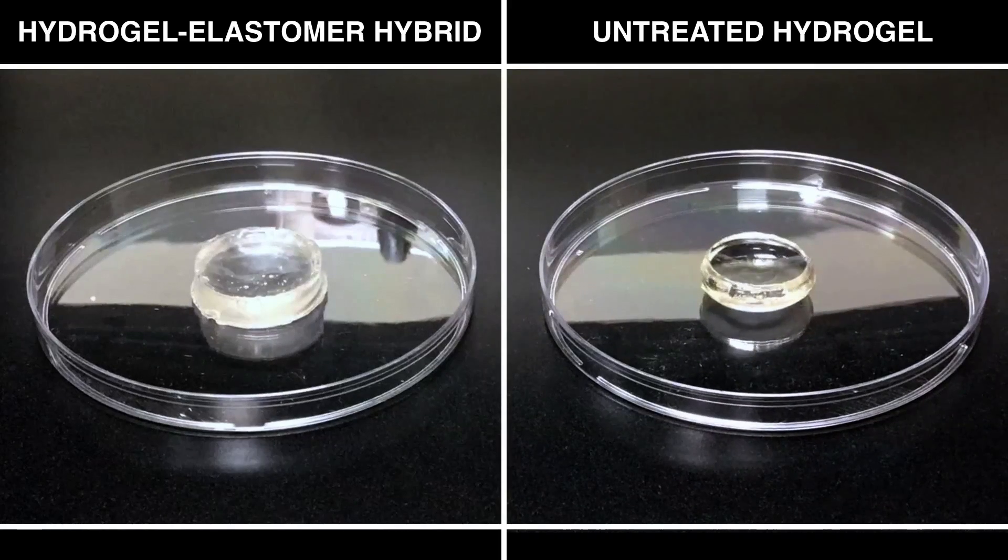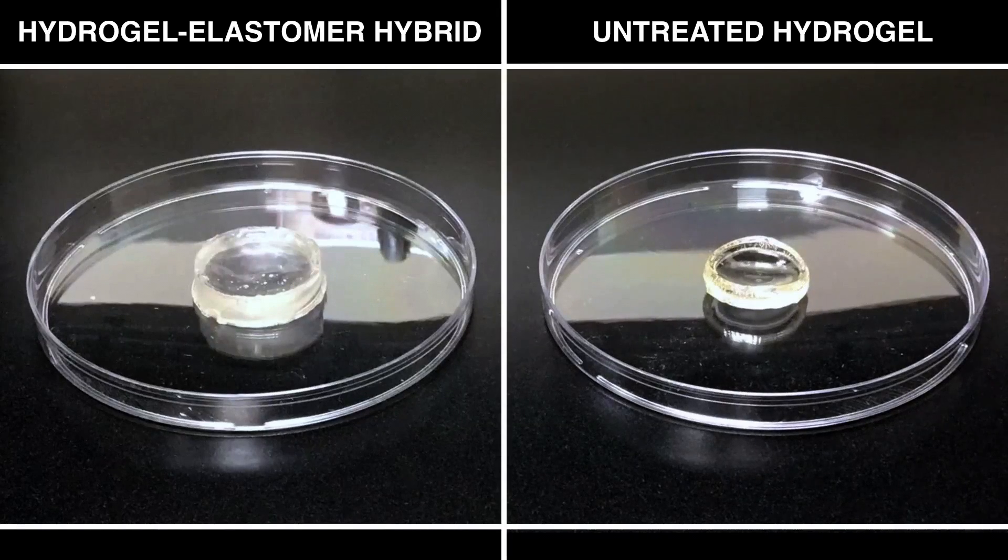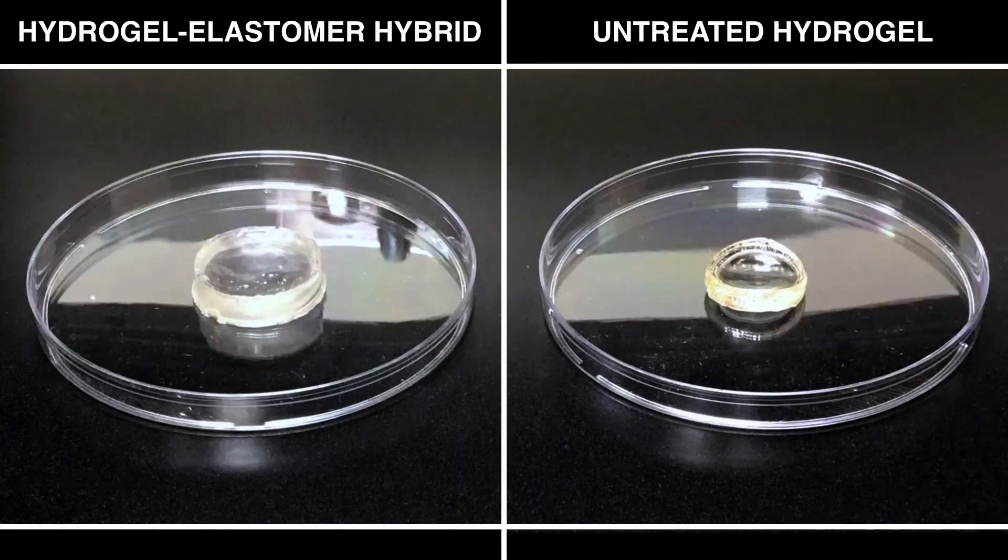Similarly, the hydrogel elastomer hybrid is the shield that protects the hydrogel and all the components embedded within it from drying out and malfunctioning.